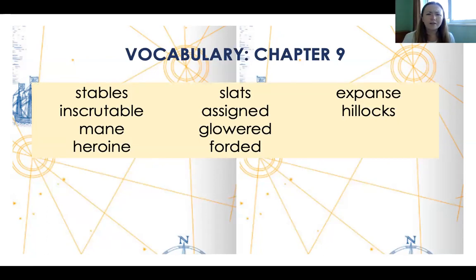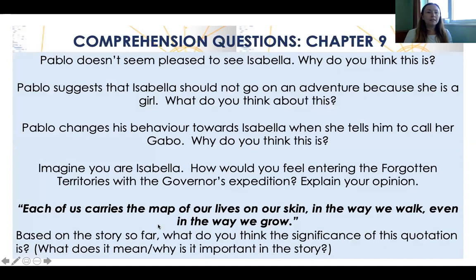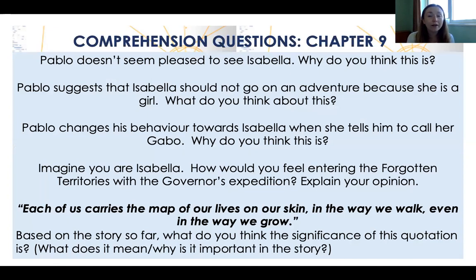Chapter nine vocabulary includes: stables, inscrutable, main, heroine, slats, assigned, glowered, and expanse, hillocks. Questions: Pablo doesn't seem pleased to see Isabella — why? Pablo suggests Isabella should not go on the adventure because she's a girl — what do you think about this? Pablo changes his behavior towards Isabella when she tells him to call her Gabbo — why? It's noticeable that he changes his demeanor — his way of speaking and acting — and that's all part of the developing relationship between Pablo and Isabella.